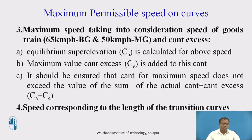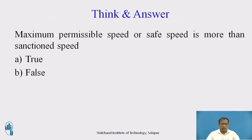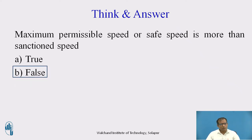The fourth factor is the speed corresponding to the length of transition curves. Calculate the speed considering these four factors and take the least value — that will be your safe permissible speed. Before the numerical example: is it true or false that the maximum permissible speed is more than the sanction speed? The correct answer is false, because maximum permissible speed is lesser than the sanction speed. The equilibrium speed comes first, then maximum permissible speed, and sanction speed is the last and highest speed allowed for the track.